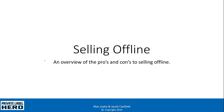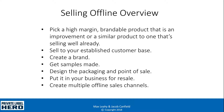This video is an overview of all the steps it takes to selling offline in your business. First thing you do is pick a high margin brandable product or line of products that are improvements or similar products to one that's selling well already. You sell to your established customer base by creating a brand, getting samples made, designing the packaging and point of sale, and you put it in your business and create multiple offline sales channels.